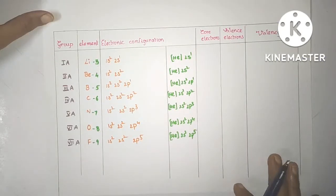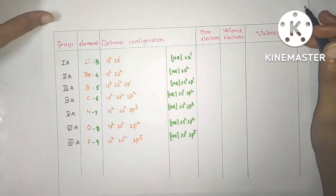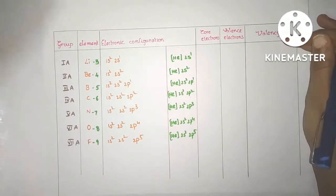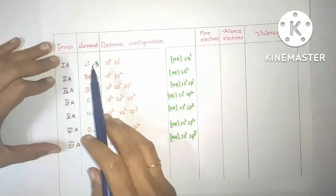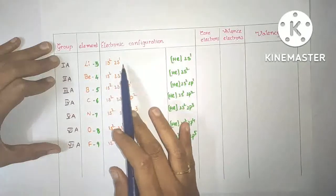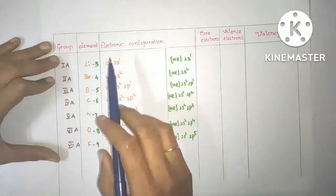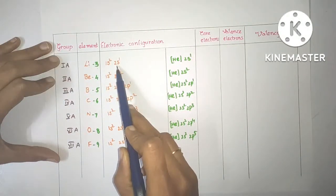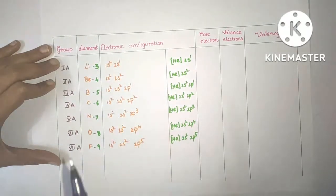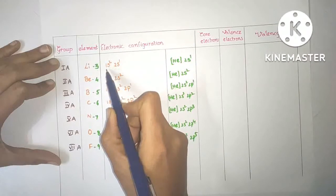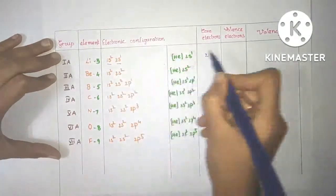Now let us see examples of how we can calculate the number of core electrons, valence electrons, and valency. These are elements from group 1A to 7A. Lithium has atomic number 3 and electronic configuration 1s² 2s¹. The first shell is the inner shell and second shell is the outermost shell. The number of core electrons is 2 and valence electrons is 1.